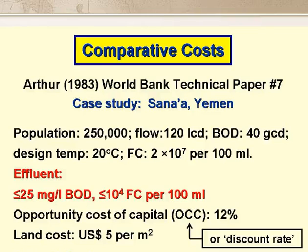We are now going to look at a case study developed by Jim Arthur for the World Bank in the early 1980s. He compared four different wastewater treatment processes to treat the wastewater from the city of Sana'a in the Yemen Arab Republic. Arthur designed these systems for a population of 250,000, a wastewater flow of 120 litres per person per day, and a BOD contribution of 40 grams per person per day.